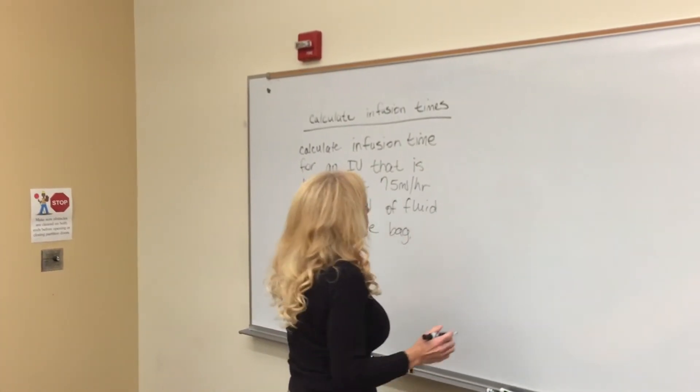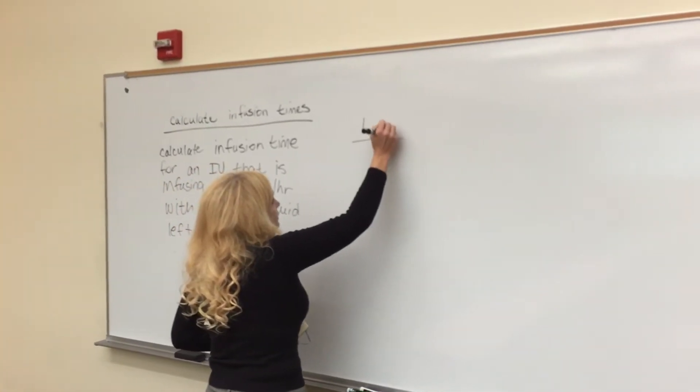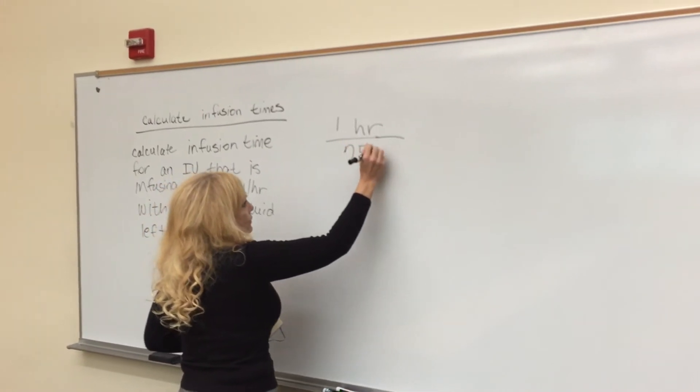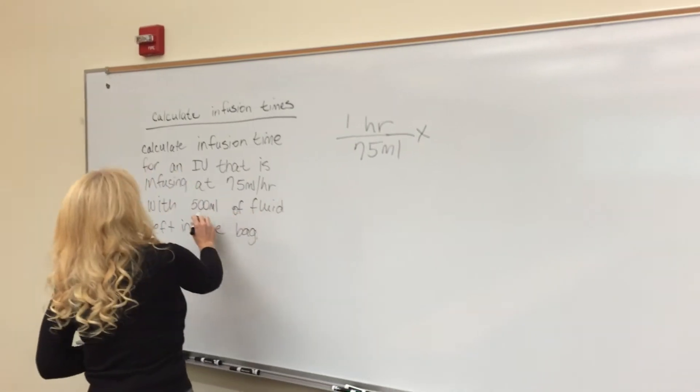The first thing you need to do is figure out hours. You need to put one hour over the 75, which is the milliliters per hour, times what's left in the bag, which is 500 milliliters.